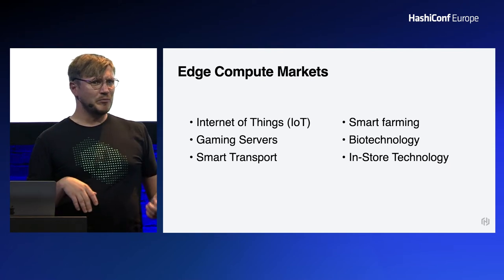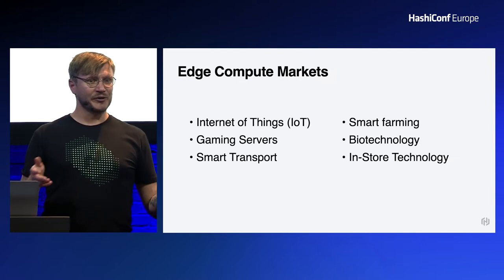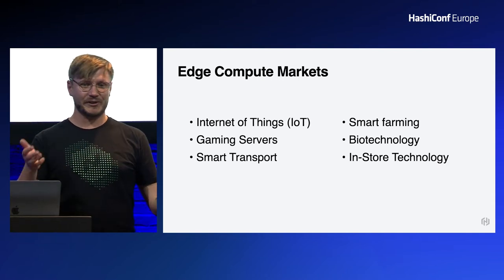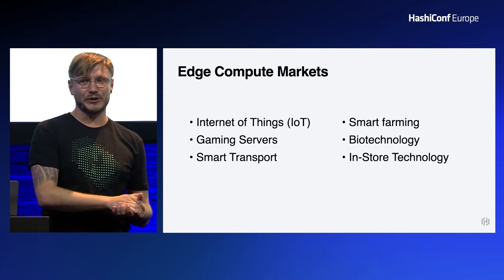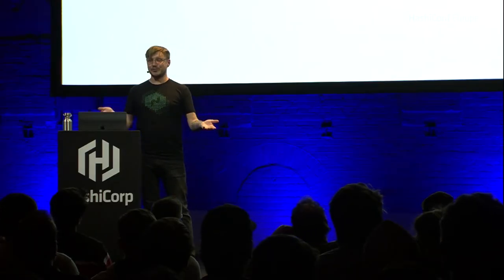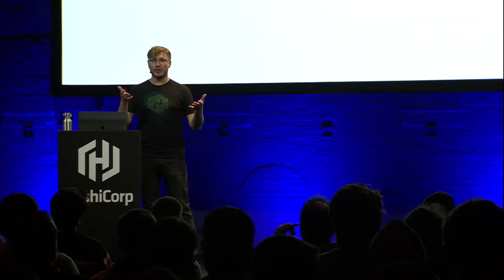Smart transport — maybe synonymous with self-driving cars, but there are lots of other applications: satellite navigation to avoid traffic jams, making sure you meet the bus on time, bus and train displays so you know what's going on. It can also be for enforcement — ANPR, automatic number plate recognition, and speed cameras, things that everyone loves.